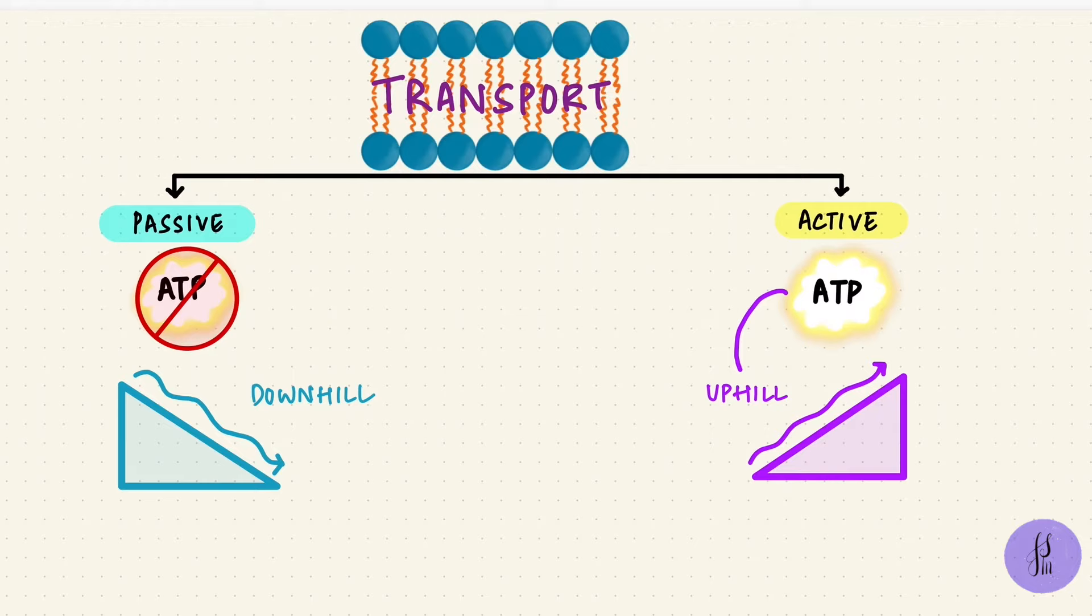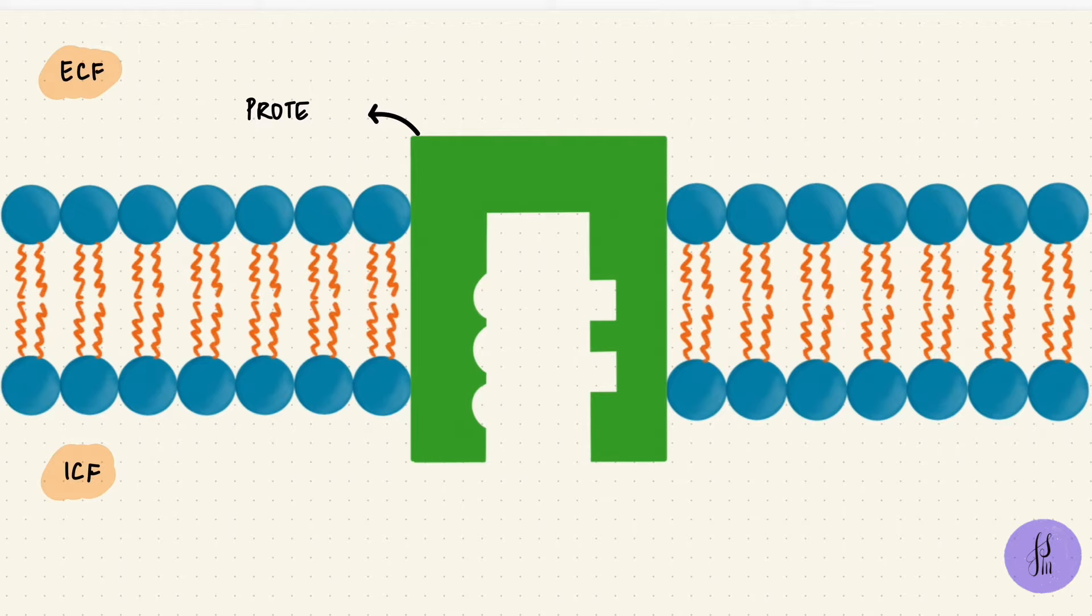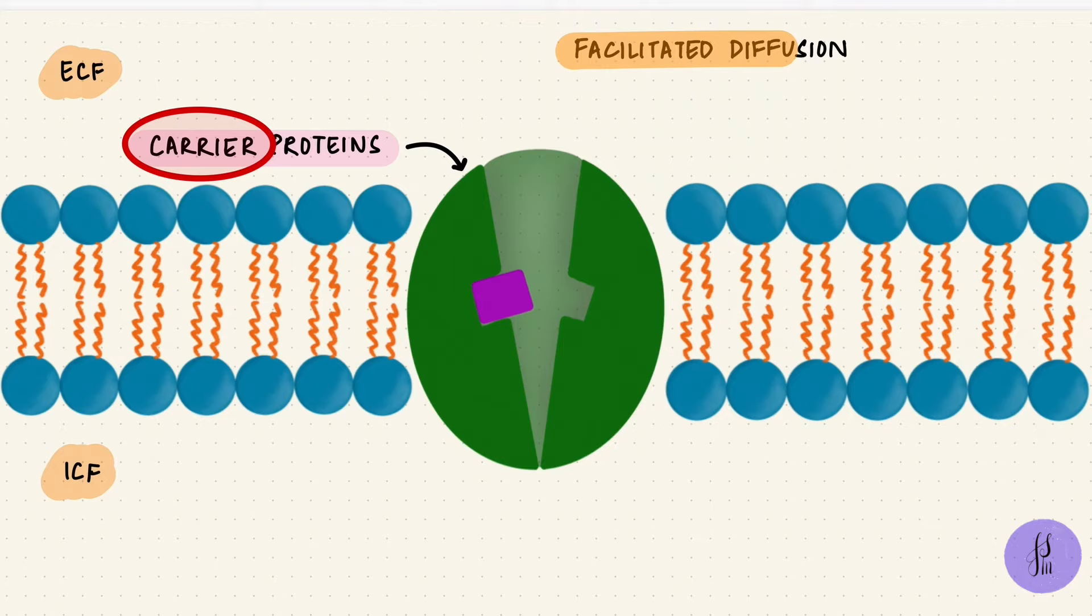This kind of transport needs to use proteins in the cell membrane, and these proteins are called carrier proteins. Carrier proteins are used in diffusion as well, for facilitated diffusion, but remember that diffusion is along the gradient, it's passive transport from high to low. Here we're talking about active transport, and these carrier proteins can be called pumps in active transport.